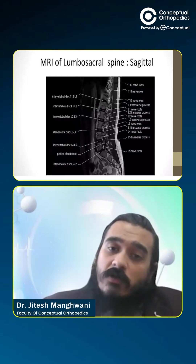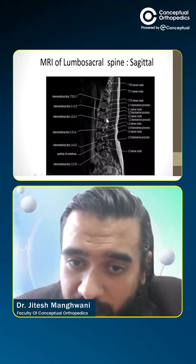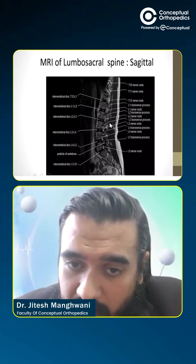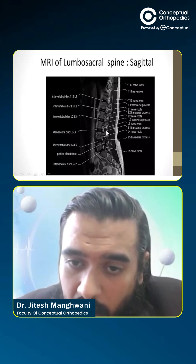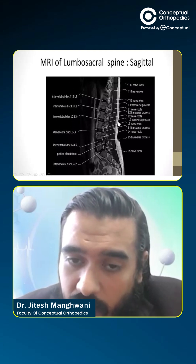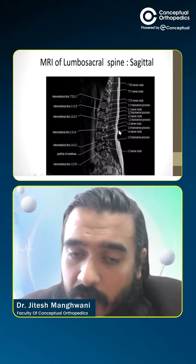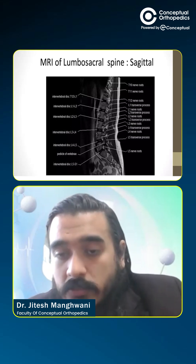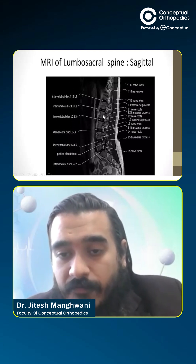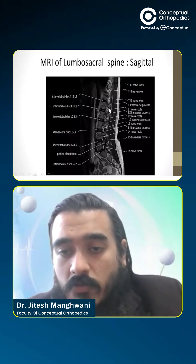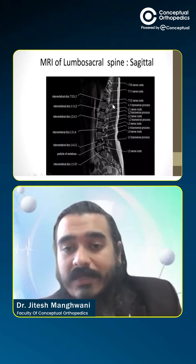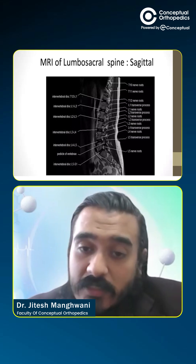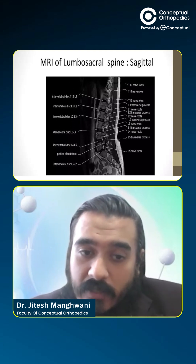The parasagittal image of the lumbar spine shows us the foramen and the nerve roots that come out of the foramen. The nerve root comes out from here and goes to supply the leg. All the different nerve roots — L5, 4, 3, 2, 1 — can be seen properly on this MRI so that if compression or canal stenosis is present, you can identify it.